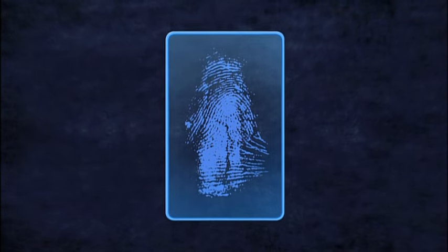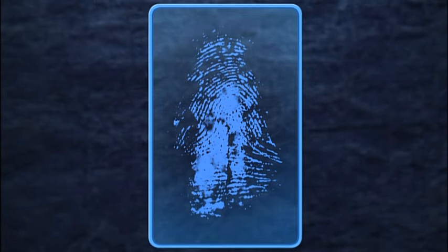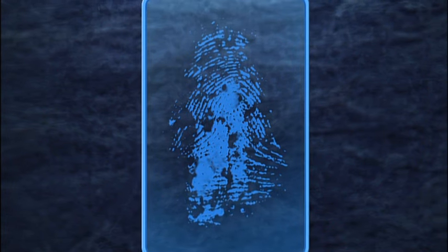But it does have limitations. Superglue chemically alters the lines of sweat and oil, and can even obscure details of a print's unique pattern. Using this method, Spanish investigators recover a partial print on the bag.